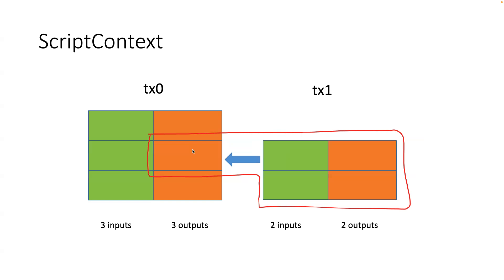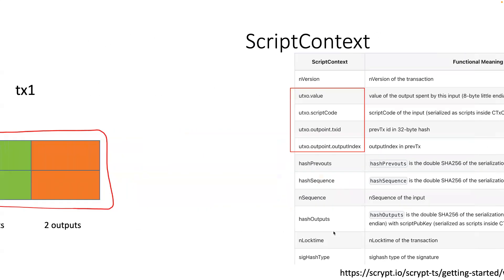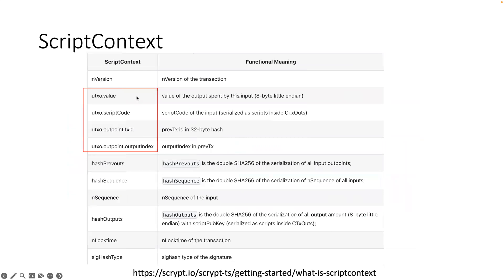That's the rough picture, and that's where sighash flags come in. On the highest level, what you just said is exactly right. Basically you have a UTXO that contains a smart contract — it has the smart contract code and the satoshi value locked in the UTXO — and the rest is all the meta information about the spending transaction which is consuming the smart contract output.